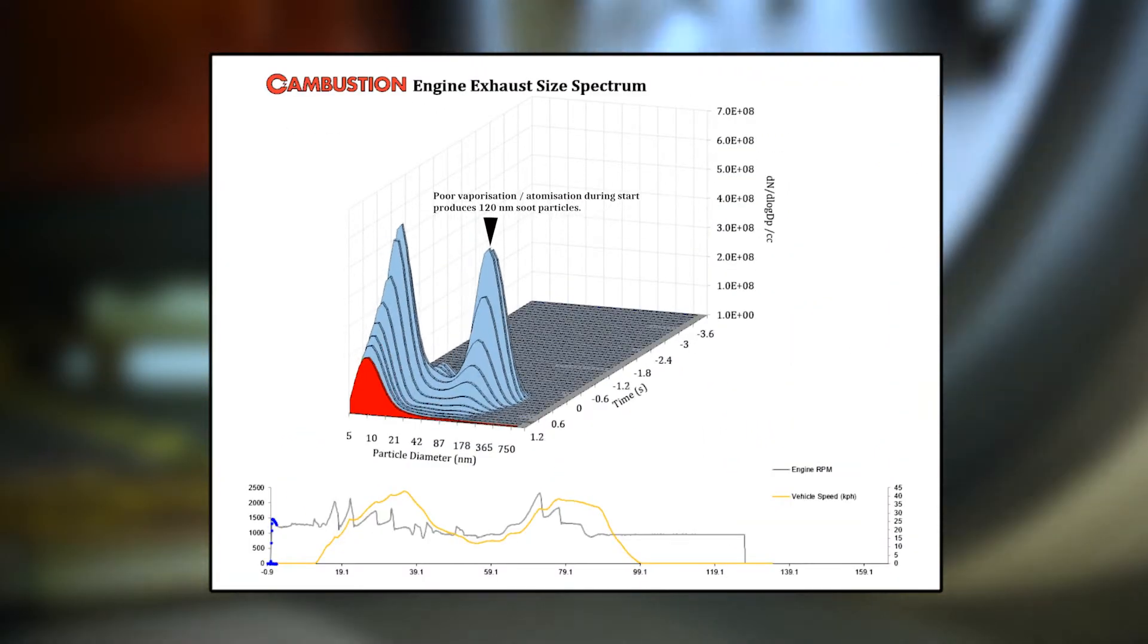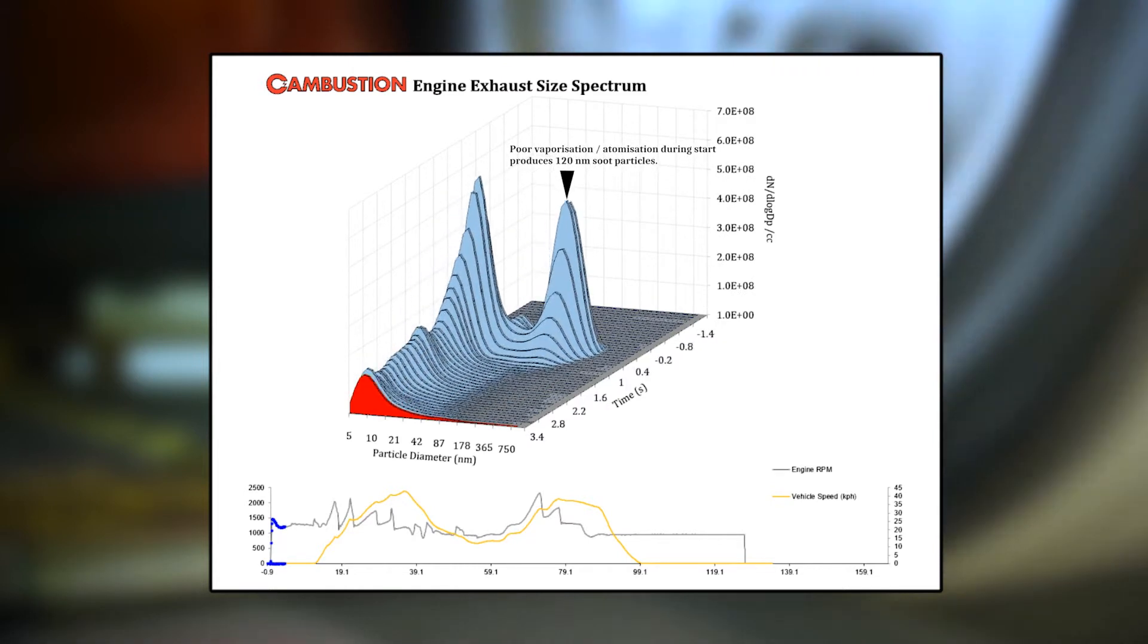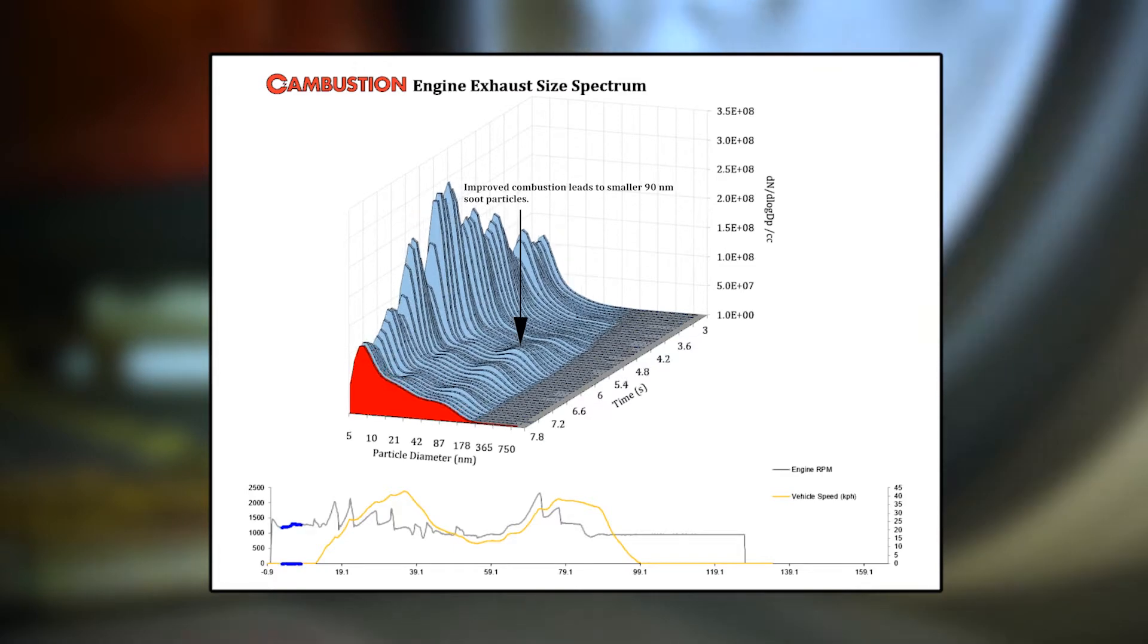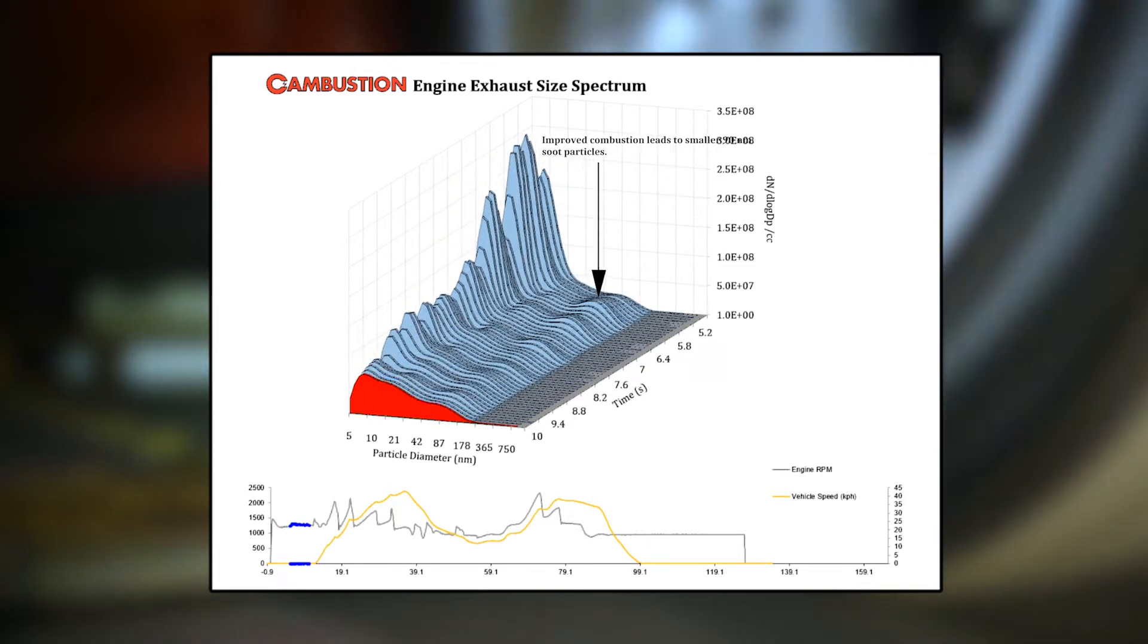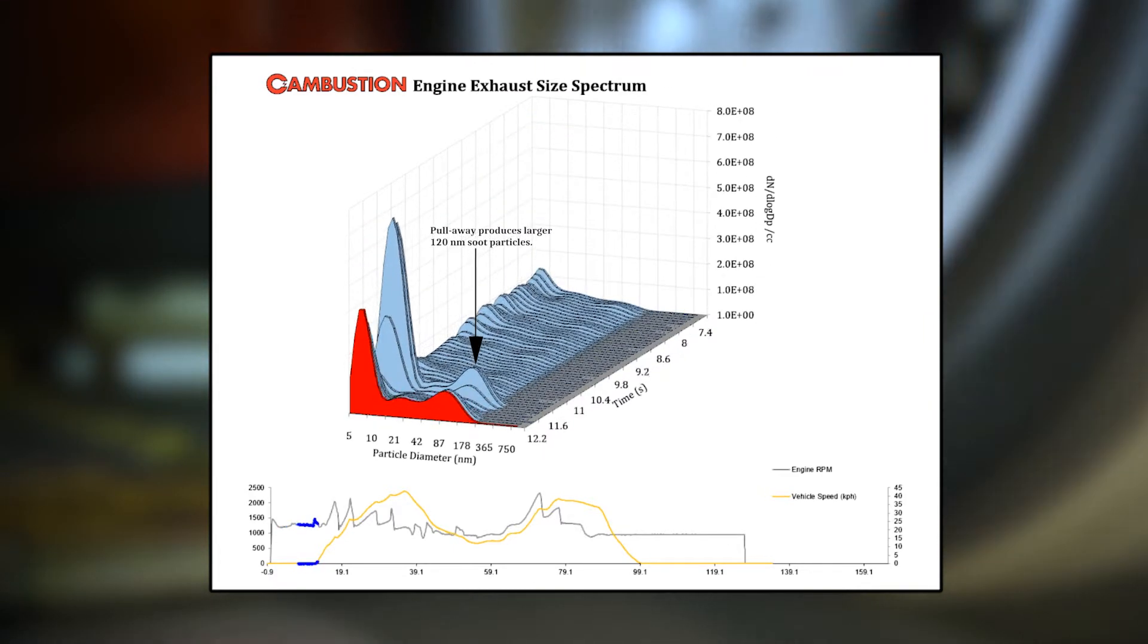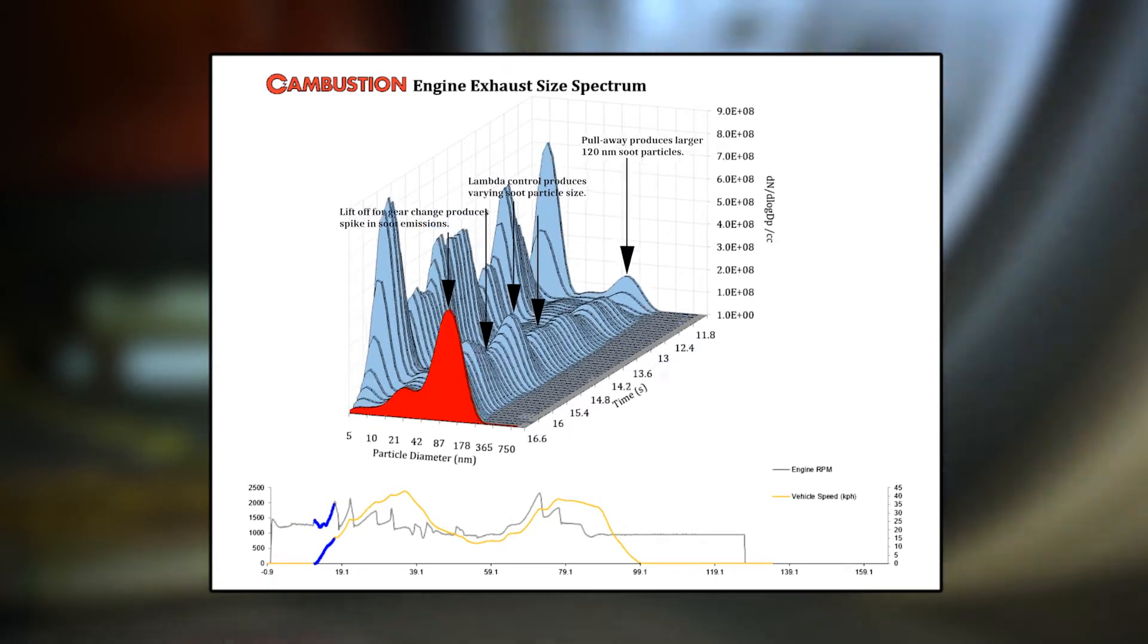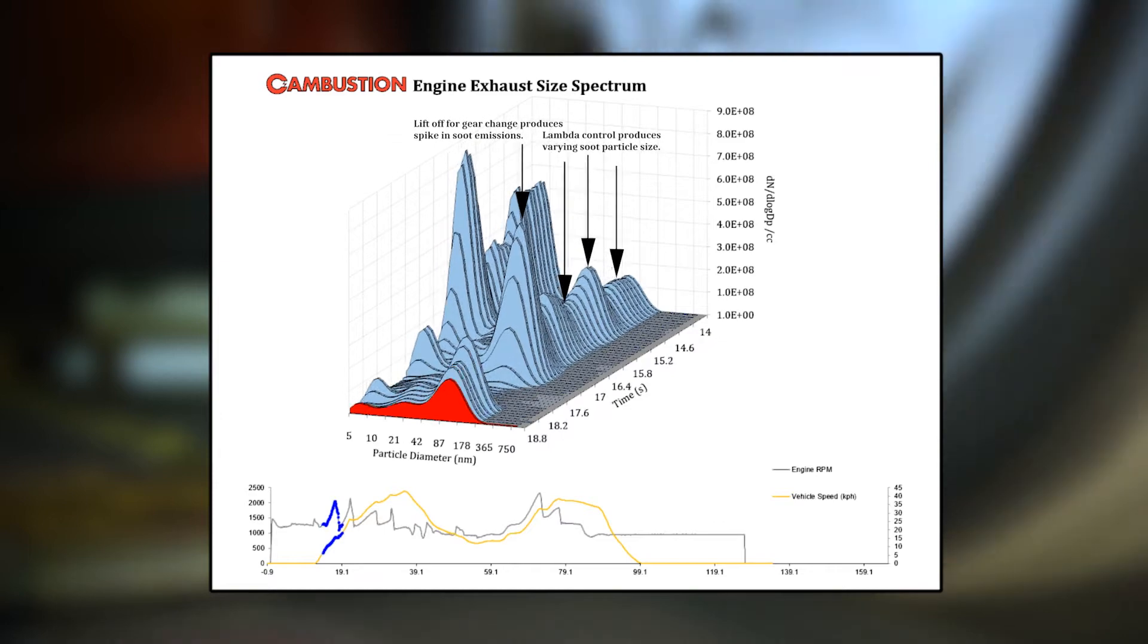The soot load of a GPF or DPF is important for efficiency, but particle size also has a role. Cambustion's particle analyser offers both real-time mass concentrations for soot load models, together with size information for filter efficiency modelling.